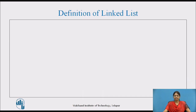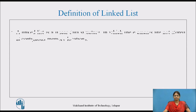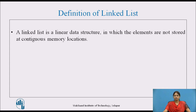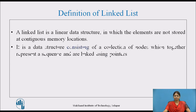Definition of linked list: A linked list is a linear data structure in which the elements are not stored at contiguous memory locations. It is a data structure consisting of a collection of nodes which together represents a sequence and are linked using pointers.